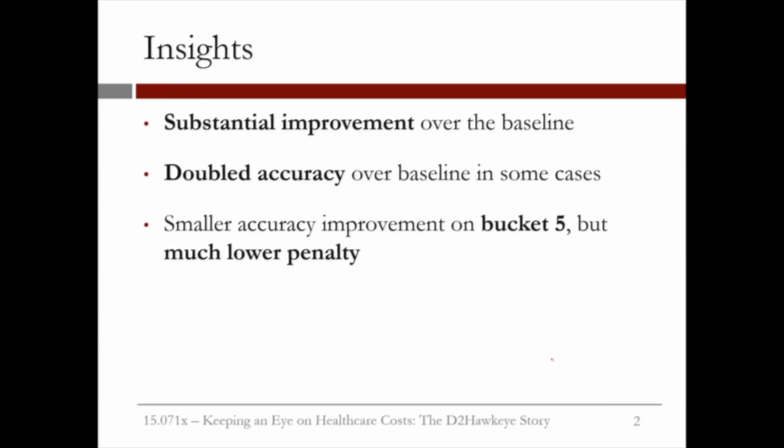We observe that there is a substantial improvement over the baseline, especially as we go down on buckets. It doubles the accuracy over the baseline in some cases. There is a smaller accuracy improvement on bucket 5, but there is a much lower penalty in the prediction for bucket 5.